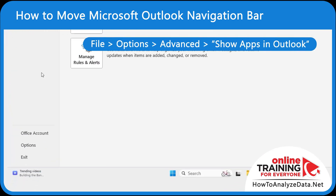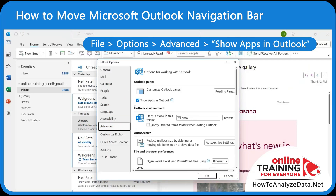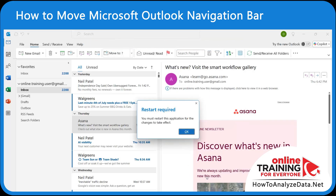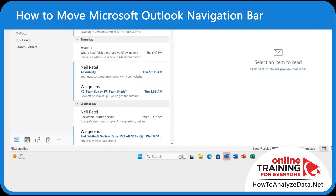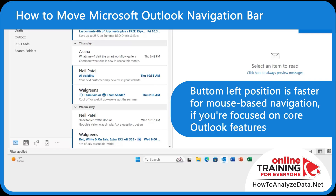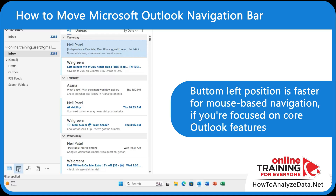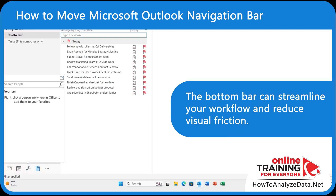In Outlook, go to File Options. In the Options window, go to Advanced. Scroll to the Outlook Panes section and uncheck the box that says 'Show apps in Outlook'. Click OK and restart Outlook. Once restarted, you'll see the navigation bar in the bottom left corner. The bottom left position is faster for mouse-based navigation, especially if you're focused on core features like email, calendar, or tasks. The bottom bar can streamline your workflow and reduce visual friction.